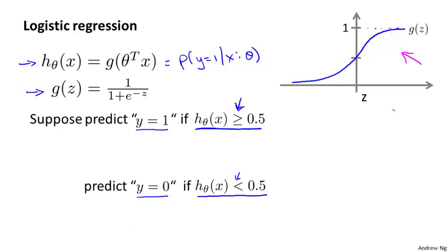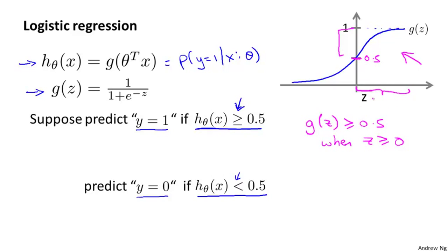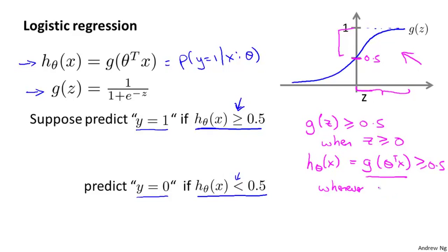Looking at the plot of the sigmoid function, g of z is greater than or equal to 0.5 whenever z is greater than or equal to 0 — that's the half of the figure where g takes on values of 0.5 and higher. Since the hypothesis for logistic regression is h of x equals g of theta transpose x, this will be greater than or equal to 0.5 whenever theta transpose x is greater than or equal to 0. So our hypothesis will predict y equals 1 whenever theta transpose x is greater than or equal to 0.